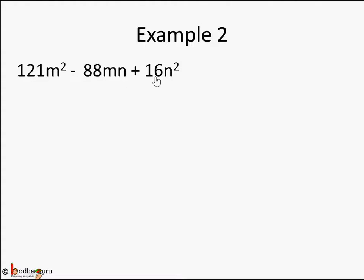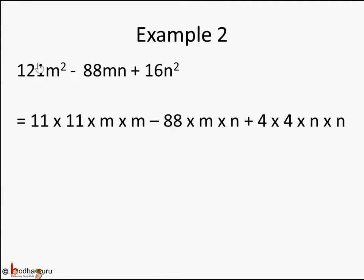Let's take another example with bigger numbers: 121m square minus 88mn plus 16n square. Is identity 2 applicable? We look for whole squares. 16 is 4 square, n square is a square of n, 121 is 11 square, and m square is m squared. So identity 2 seems possible. We factorize each term: 121 as 11 into 11, m square as m into m, and 16n square as 4 into 4 into n into n.